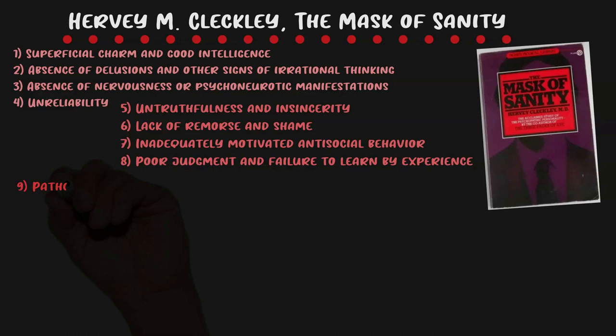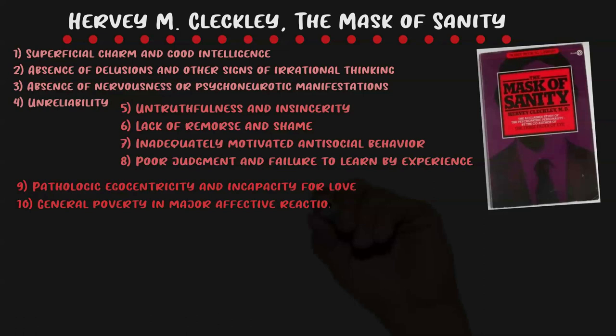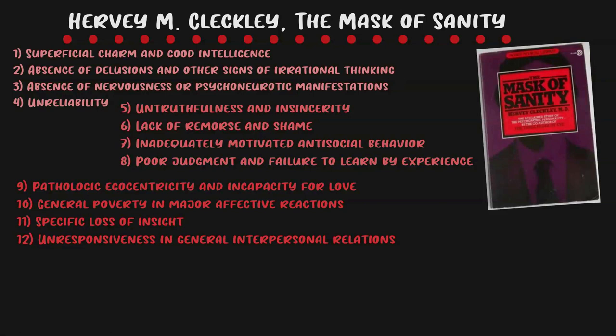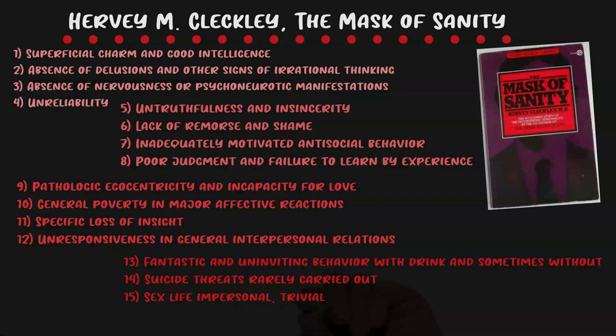The fourth is unreliability. The fifth is untruthfulness. The sixth is lack of remorse and shame. The seventh is poorly motivated antisocial behavior. The eighth is poor judgment and failure to learn from experience. The ninth is pathological egocentricity and incapacity for love. The tenth is poverty of major affective reactions. The eleventh is loss of insight. The twelfth is unresponsiveness in general interpersonal relations. The thirteenth — a personal favorite — is fantastic and uninviting behavior with drink and sometimes without. The fourteenth is suicidal threats rarely carried out. The fifteenth is sex life impersonal, trivial, and poorly integrated. And the sixteenth is failure to follow any life plan.